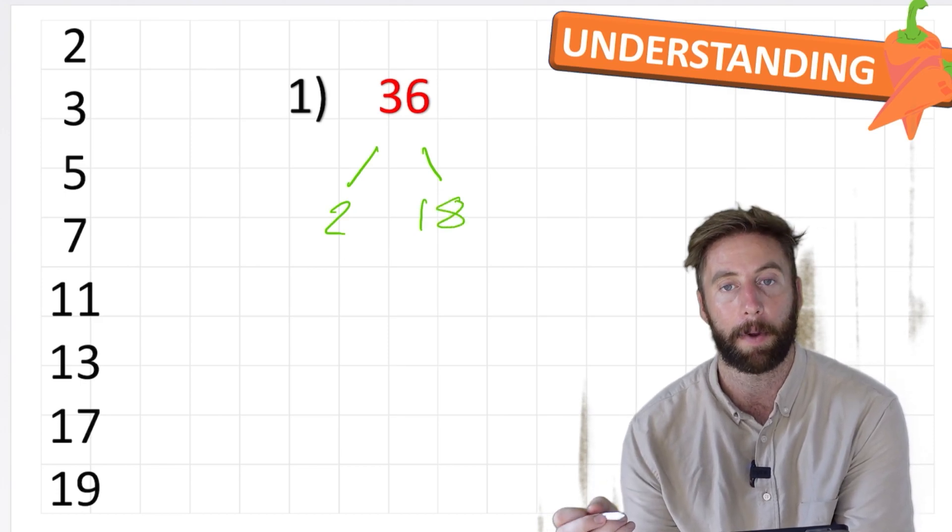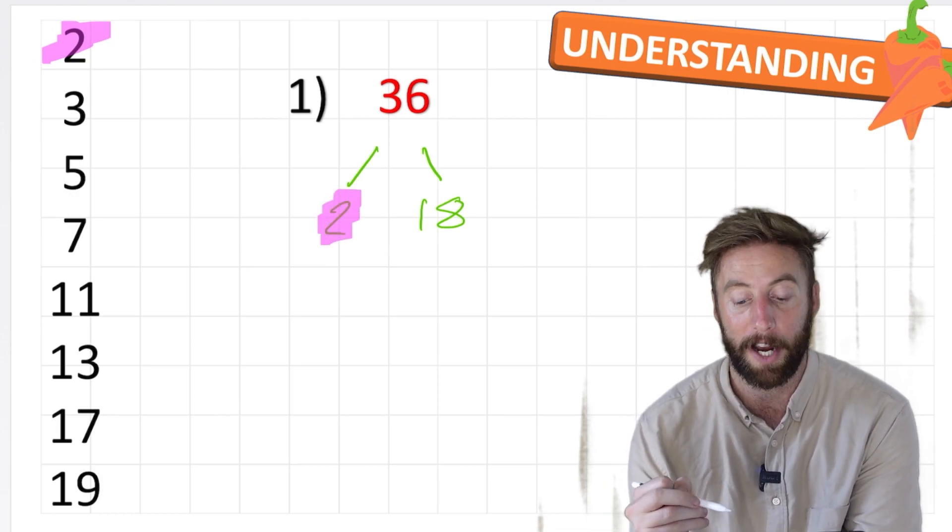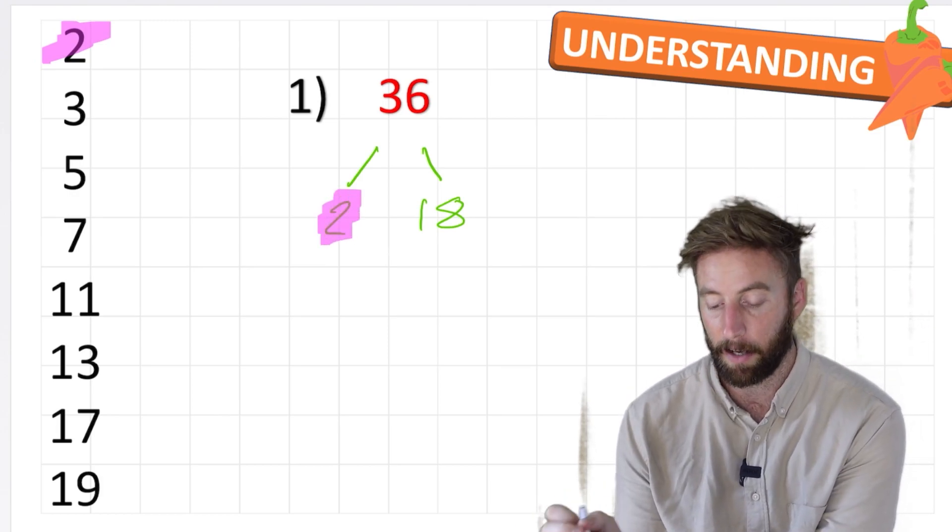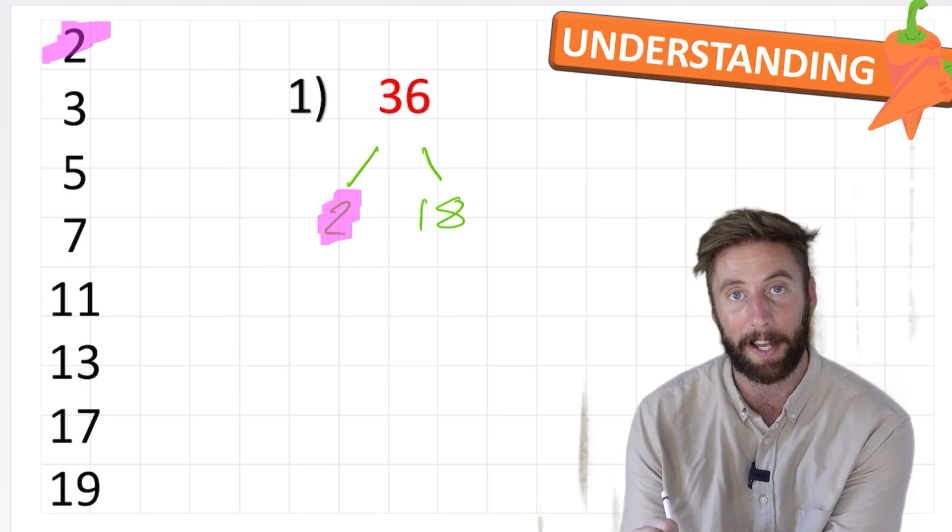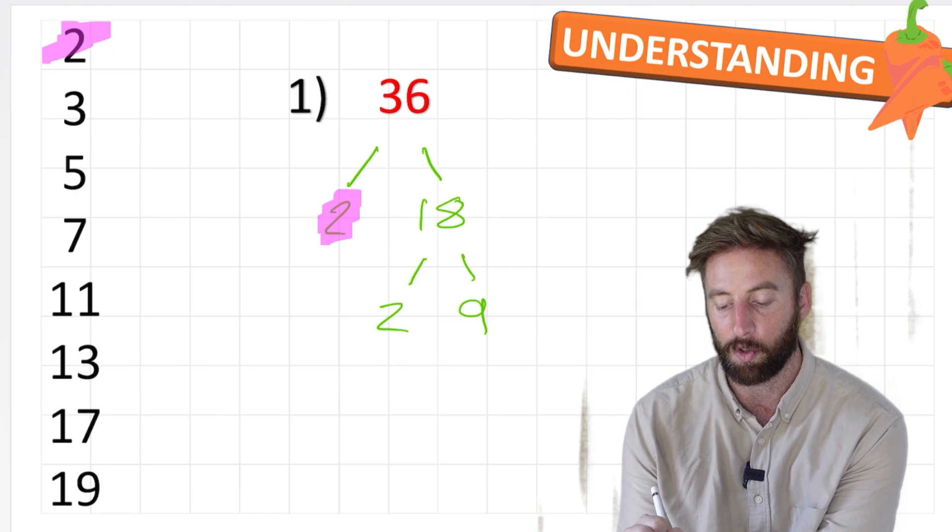Okay, so have I got down to a prime number already? I think I have. I've got the number 2. So that side, that branch is done. Now I'm going to see if I can find a factor pair for 18. Well, again, 18 is even. So I can go 2 and 9. 2 times 9 is 18.